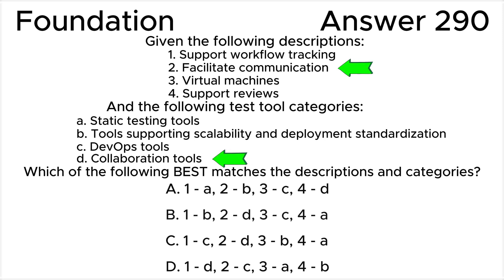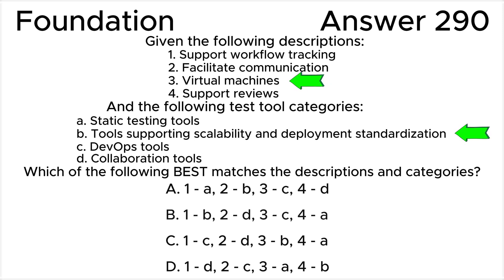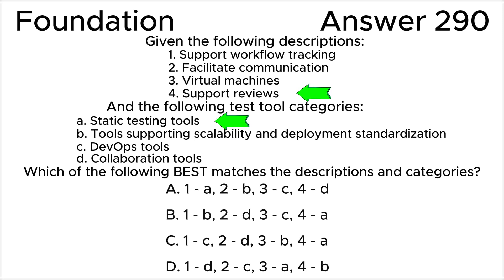Statement two — facilitate communication — corresponds to collaboration tools (d). Collaboration tools facilitate communication. Statement three — virtual machines — corresponds to tools supporting scalability and development standardization (b). For example, virtual machines and containerization tools.